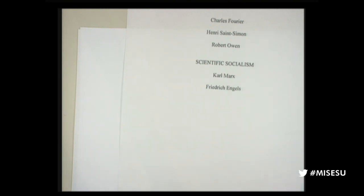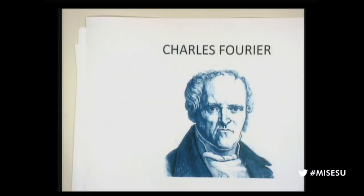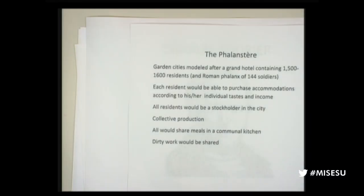Marx and Engels, the founders of what they called scientific socialism, hated the utopian socialists even more than regular free-market economists did, because they were such an embarrassment to the socialist movement. Charles Fourier proposed a 'phalanstery' based on the Roman phalanx — a military marching formation — in which there would be garden cities modeled after a grand hotel, containing exactly 1,500 to 1,600 residents, where residents could purchase accommodations according to individual tastes but production would be collective.